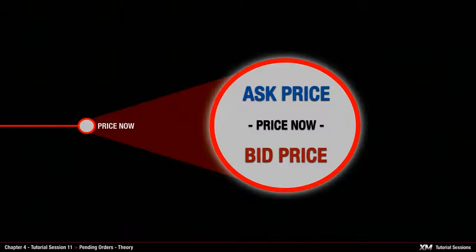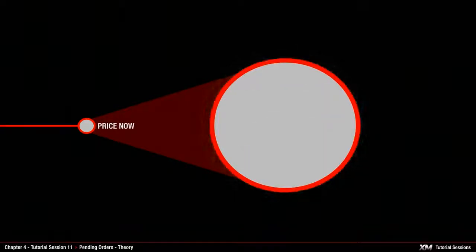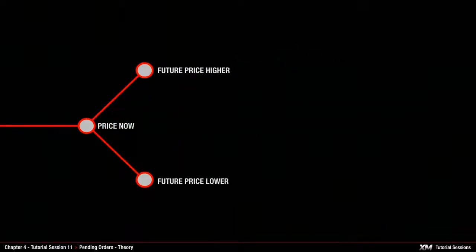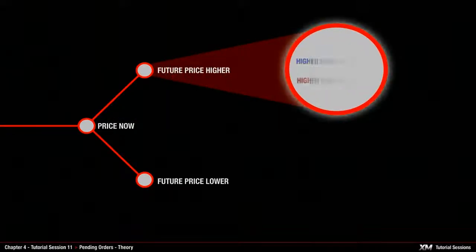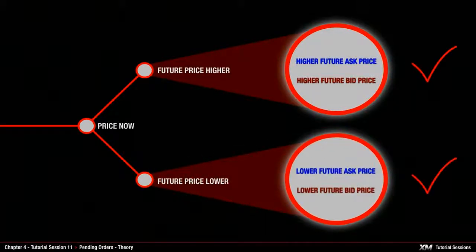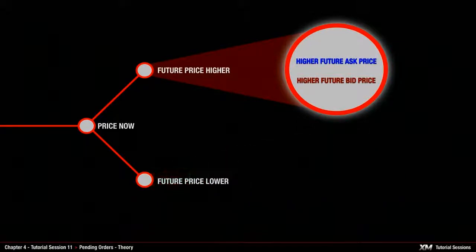If you decide to open an order now, you will need to choose only between two options: buy or sell. As we mentioned before, the pending order is set at the future price, not at the price now. For both higher and lower future price, you can place two order types — buy or sell — and they both need to be set according to the ask and the bid prices.